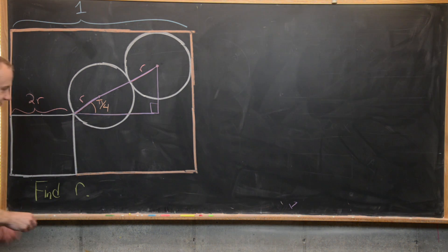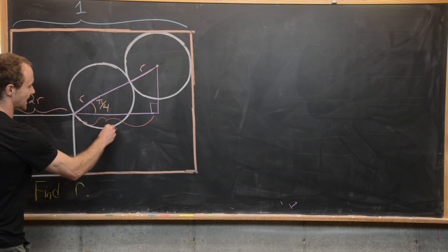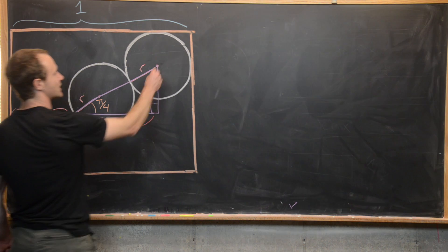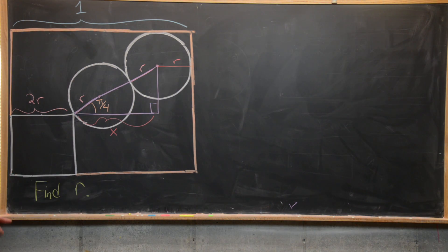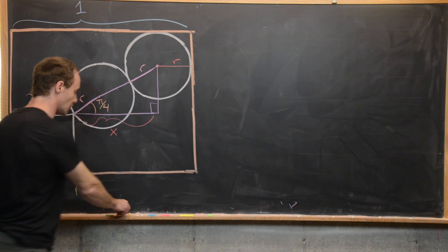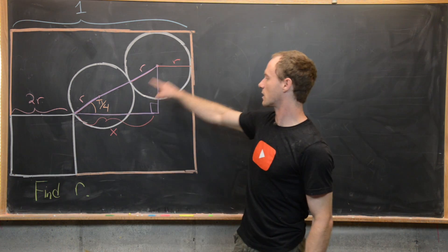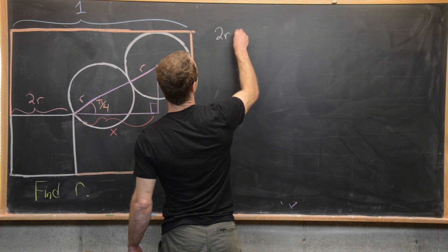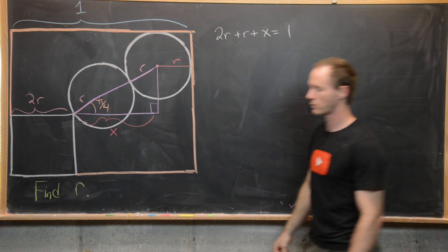Great. And so now we can measure the length of this side. Notice that we could call that x if we wanted to. And then we've got another radius up here, r. And now we can measure the length of this side of the large square a new way. So that's going to give us this equation: 2r plus r plus x equals 1. So let's see, 2r plus r plus x equals 1.